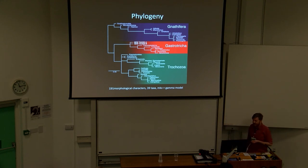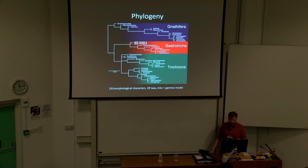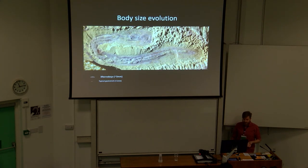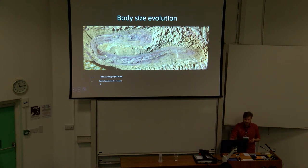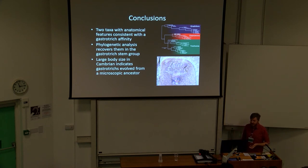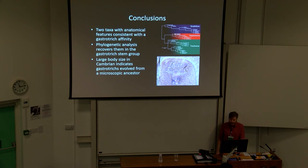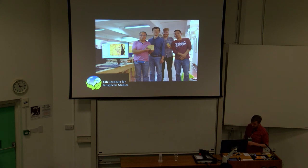This is a preliminary phylogenetic analysis incorporating our new taxa into gastrotricha phylogeny — an updated version with species- or genus-level sampling of extant gastrotricha with good molecular data is in progress. We recover these fossils in the gastrotricha stem group, which tells us about body size evolution: gastrotricha evolved from a macroscopic ancestor in the Cambrian. Shown here is one new species to scale with a typical gastrotrich of less than one millimeter and the largest known, Macrodasys, at about three millimeters. In summary, two new taxa with strong gastrotricha affinity indicate that large body size is plesiomorphic for gastrotricha and that they secondarily invaded the meiofauna, probably after the Cambrian.